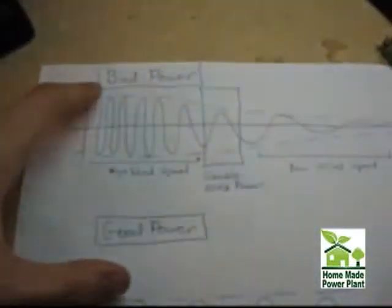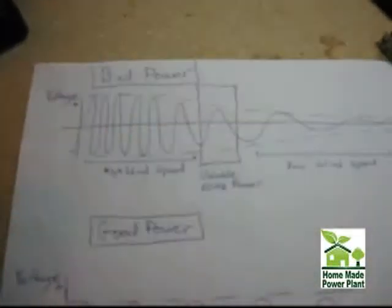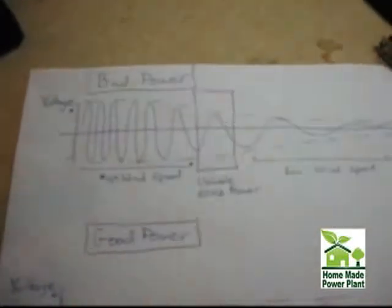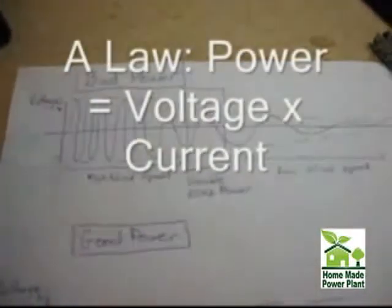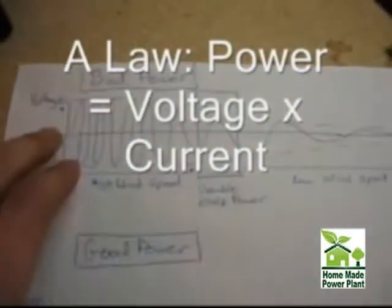To illustrate the difference between bad power and good power, I've drawn up a little diagram. First thing you'll see here is the bad power. Now, power is composed of voltage and current. It's actually the product of voltage and current. That's a law, and what you'll see here is that bad power is very messy compared to good power.